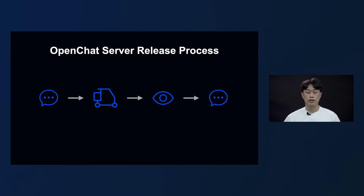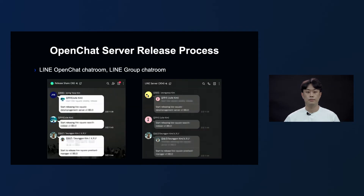There are four main steps in the release process. First, we share the beginning of the release to the related developers in the chat room. This may be seen as a minor process, but if there is an outage on other storages or servers due to the OpenChat Server release, it can be an important clue to identify the root cause of the issue. As seen in the picture, we share to both the Line OpenChat chat room and the Line Group chat room.